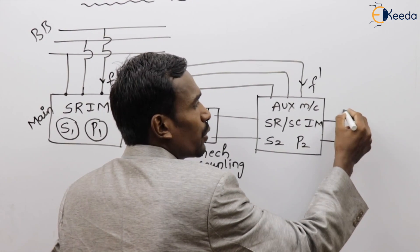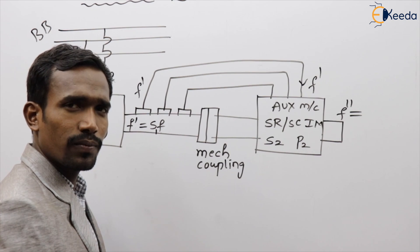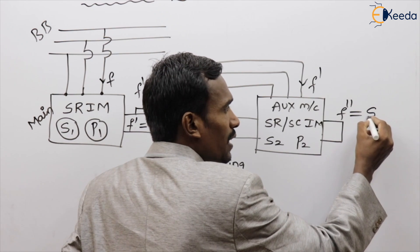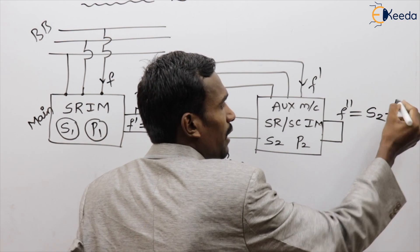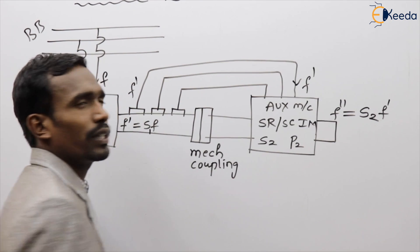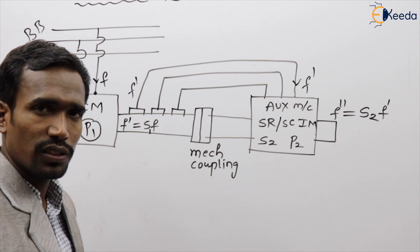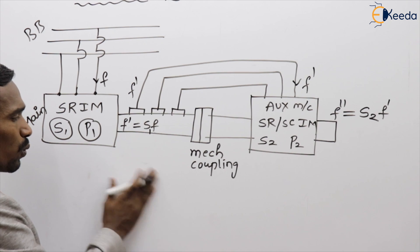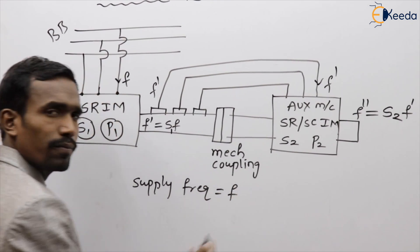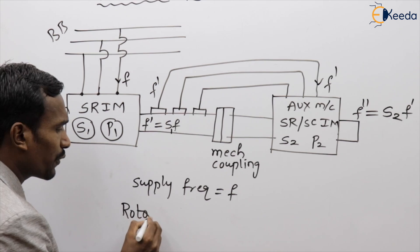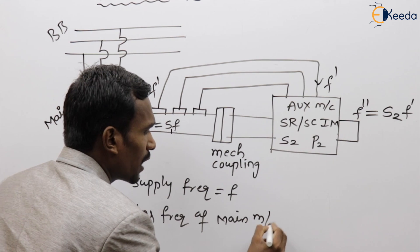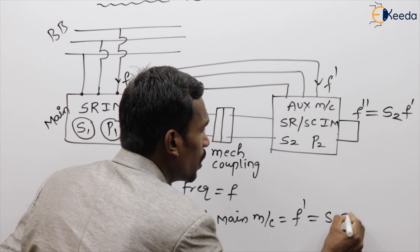The rotor frequency of the auxiliary machine is F double dash. F double dash equals S2 × F dash. So the actual supply frequency is F, the rotor frequency of the main machine is F dash = S1 × F, and the rotor frequency of the auxiliary machine is F double dash = S2 × F dash.